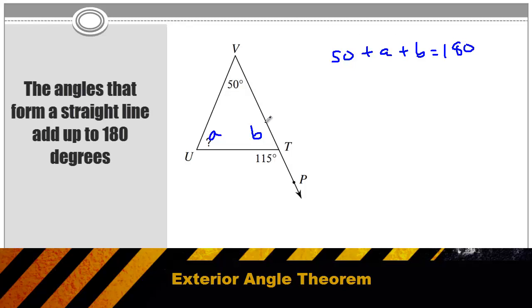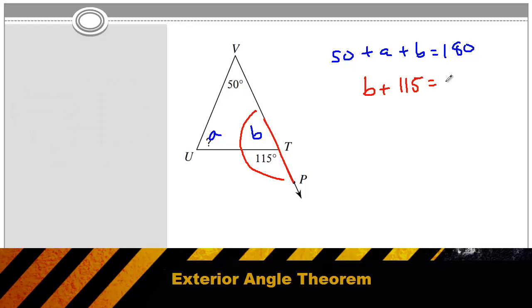The first thing I know is that every triangle angles add up to 180 degrees. So I could write the equation that 50 plus a plus b equals 180 degrees. The next thing I notice is that when I look at angles b and the 115 degree angle, that makes a straight line. And I know that every straight line also equals 180 degrees. So I could write the equation that b plus 115 is equal to 180.